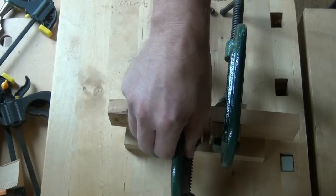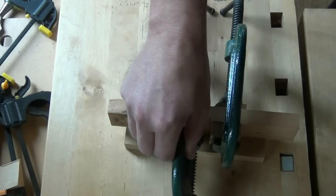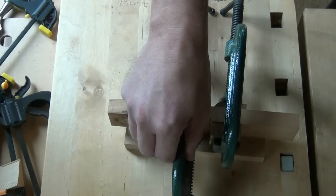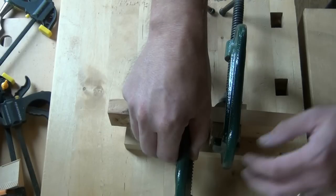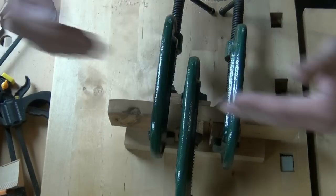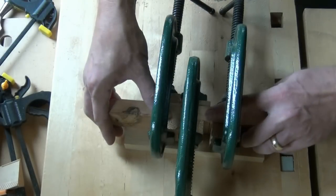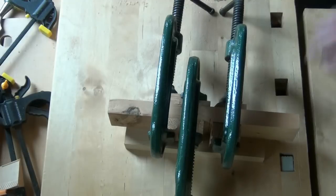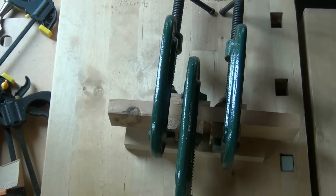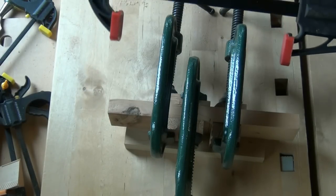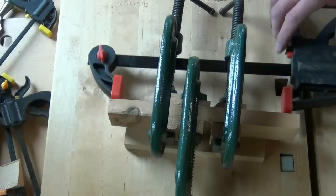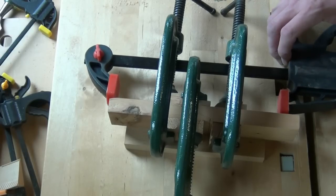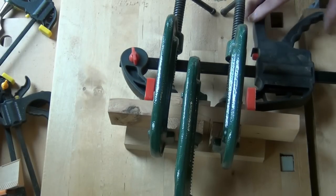But as we tighten this clamp up, the wedges, the bevel surfaces especially now that they've got glue on will try to push the components apart, so we need to counteract that by clamping in this direction on the blocks that we've installed like so.